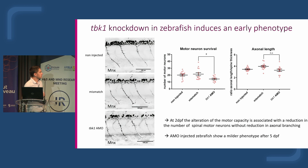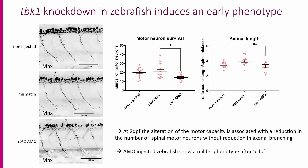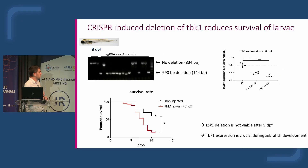We examined motor neuron levels in more detail by imaging transgenic fish carrying an MNX reporter with a fluorescent reporter. Simply by counting cells in the spinal cord, we found a decreased number of motor neurons. We also looked at axonal length and branching but did not find any significant difference. Unfortunately, the phenotype of morpholino-injected zebrafish tends to disappear after a couple of days.